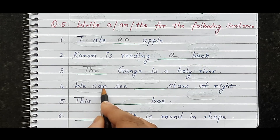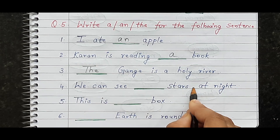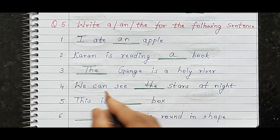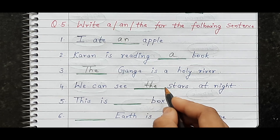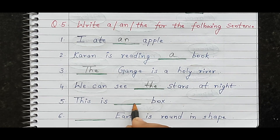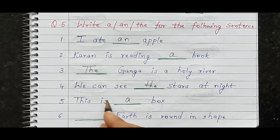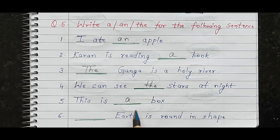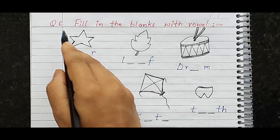Next: 'Dash starts at night.' Stars is a unique, specific thing we refer to, so we use 'the.' So: 'We can see the stars at night.' Next: 'Dash earth is round in shape.' The earth is also a specific, unique thing, so we use 'the.' So: 'The earth is round in shape.'